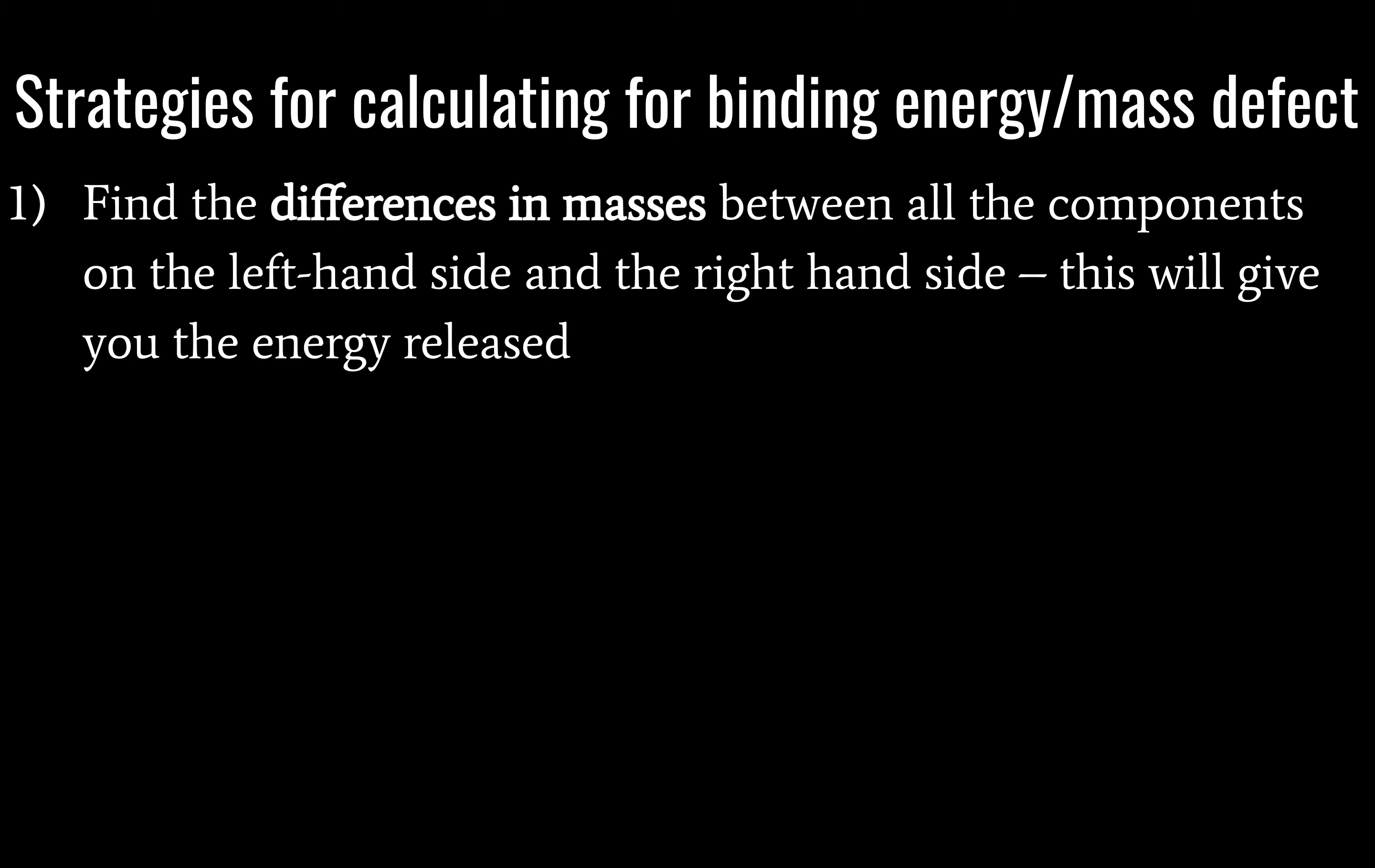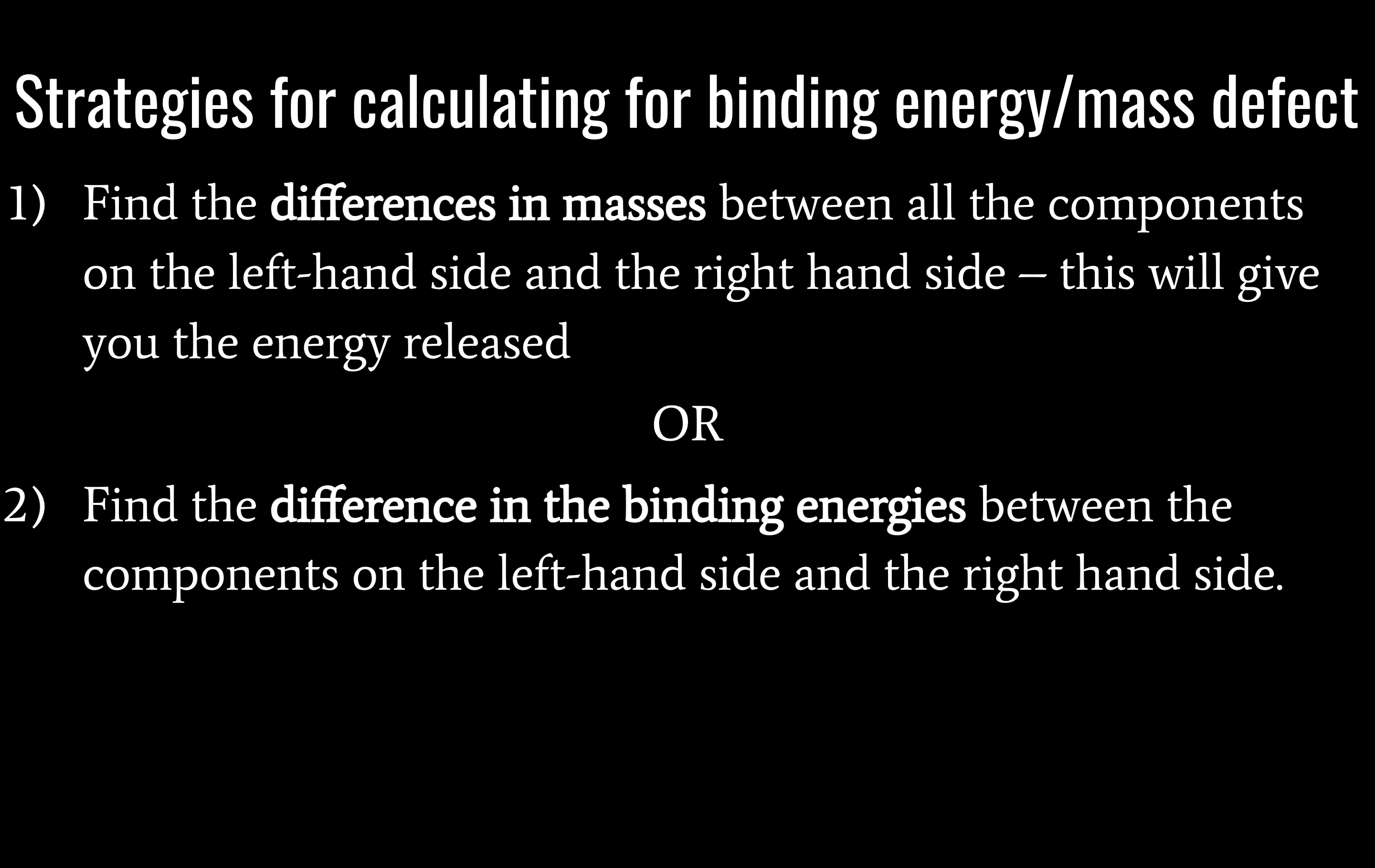Here are a couple strategies for calculating binding energy and mass defect. First, find the differences in masses between all the components on the left-hand side of the equation and the right-hand side of the equation. This is going to tell you the energy released. Or you could find the difference in binding energies between the components on the left-hand side and the right-hand side, and that way you can calculate your mass defect. If you know the difference in mass, the mass defect, you can calculate energy. If you know the difference in energy, you can calculate the mass defect.